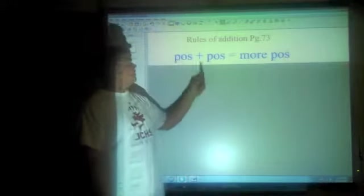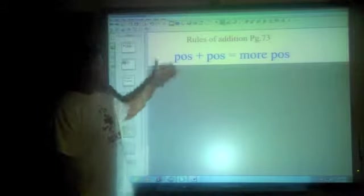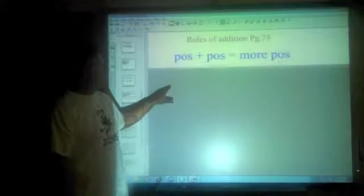Anytime you take a positive number and you add positive numbers to that, you're going to get more positive numbers. So that's pretty straightforward. 5 plus 7 equals 12. Positive plus positive equals more positive.